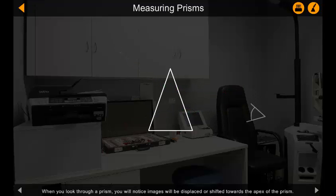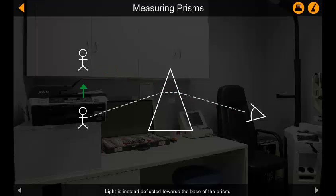When you look through a prism, you will notice images will be displaced or shifted towards the apex of the prism. Light is instead deflected towards the base of the prism.